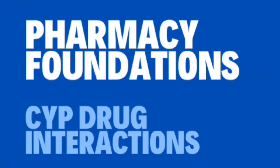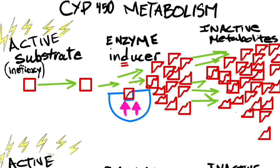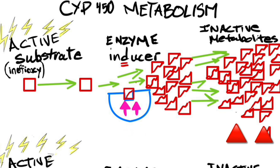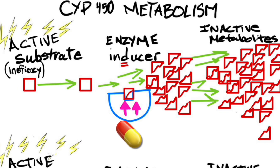Pharmacy Foundation's CYP450 Drug Interactions. In CYP450 metabolism, substrates — like you see on the left-hand side in red — are metabolized by the cytochrome P450 enzymes in the liver, represented by the blue right there. These enzymes help break down substrates into smaller, more easily eliminated molecules, like what you see on the right-hand side.